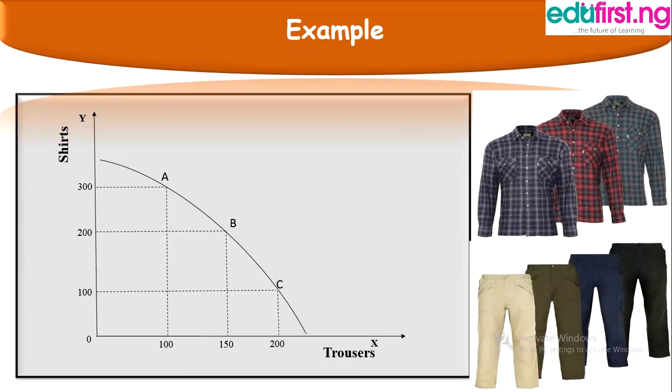Assuming the company wishes to produce 200 units of trousers, it means the company will have to reduce the units of shirts that will be produced, and that is shown at point C on the graph. Then if the company wishes to increase the production of shirts to 300 units, it cannot at the same time produce 200 units of trousers. So since the company is increasing the quantity of shirts, the quantity of trousers will be reduced to 100 units, and that is shown at point A on the graph.